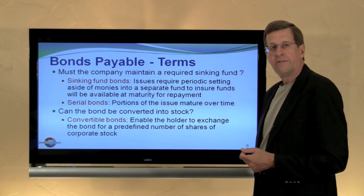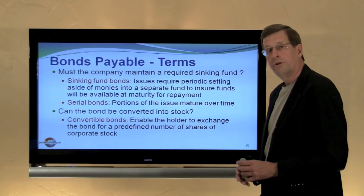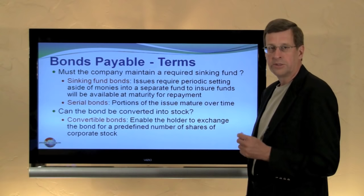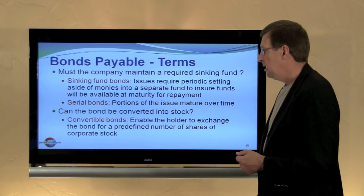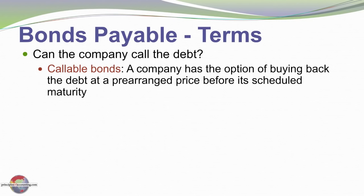Some bonds are convertible — they can be converted into shares of stock, enabling the holder to exchange the bond for a predetermined number of shares. If the stock rises significantly in value, a holder might do quite well by exchanging a $1,000 face value bond for shares worth more than $1,000. A company might issue convertible bonds to lower their borrowing costs, since investors attracted to convertible bonds are willing to accept a much lower periodic interest payment.